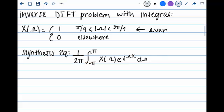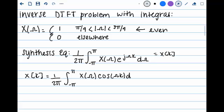By doing so we will obtain 1 over 2 pi integral of negative pi to pi x omega times cosine omega k d omega plus j over 2 pi integral of negative pi to pi of x omega times sine omega k d omega.